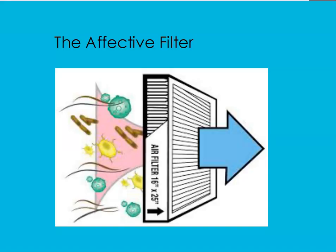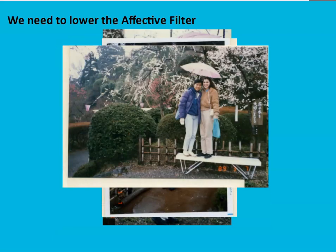Today we are talking about the affective filter. This is a linguistics term. What is a filter? A filter stops things from coming through. So the affective filter is that little voice in your head that says, you know what, I don't want to say 'arre' out loud because I can't say 'arre' and it's going to sound stupid and everyone's going to laugh at me.